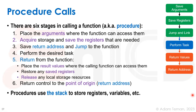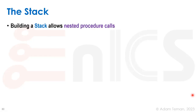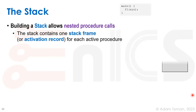The procedure uses the stack to store registers, variables, and so forth. The stack is a piece of memory that allows us to nest procedure calls. The stack contains one stack frame — which can also be called an activation record — for each active procedure.